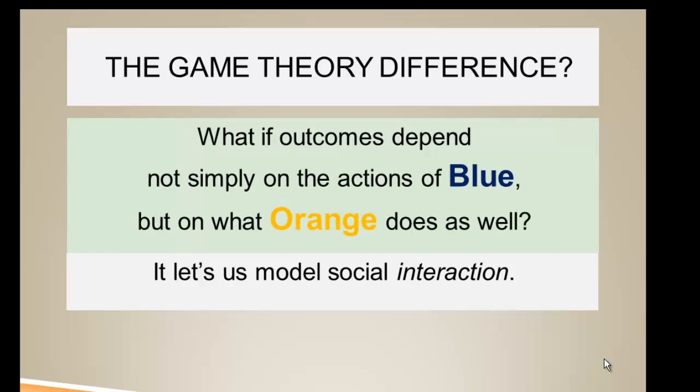What if the actions depend not simply on what blue does but on what orange does in response? What if we can't determine whether an act is altruistic from the acts of one agent alone? We have to look at it in the context of interactions. And this is what game theory is about.